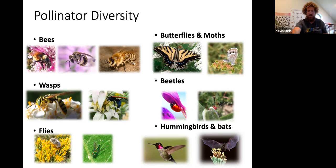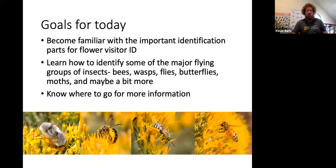The goals for today are: to become familiar with important identification parts for flower visitor ID — body parts that tell us what type of animal we're looking at — and to learn how to identify some of the major groups of flying insects: specifically bees, wasps, flies, butterflies, moths, and maybe more if we have time.